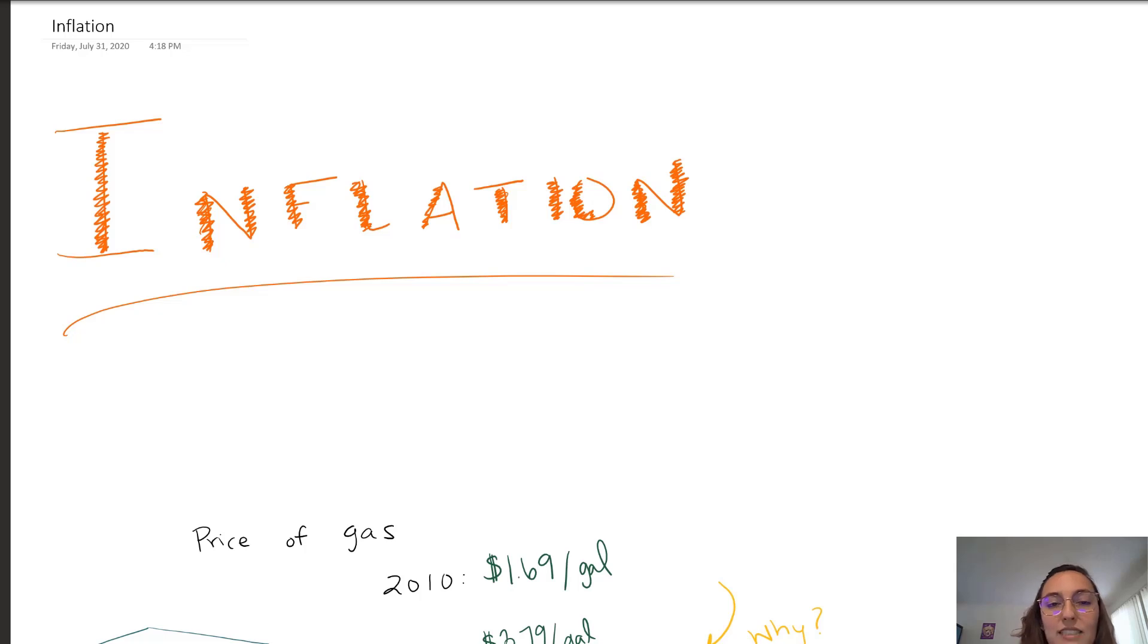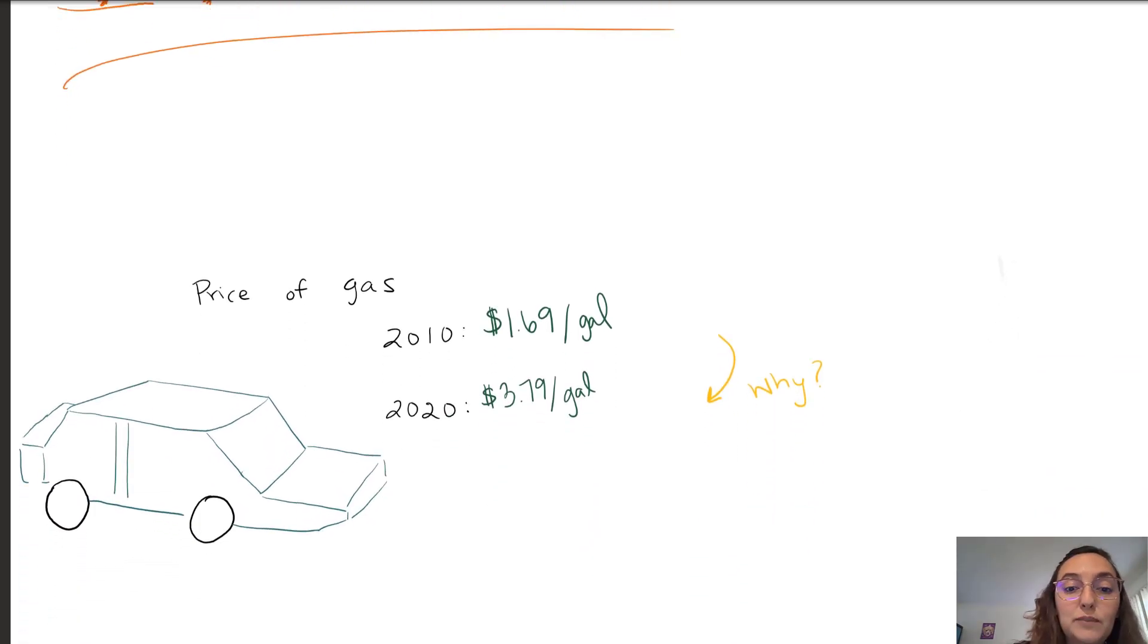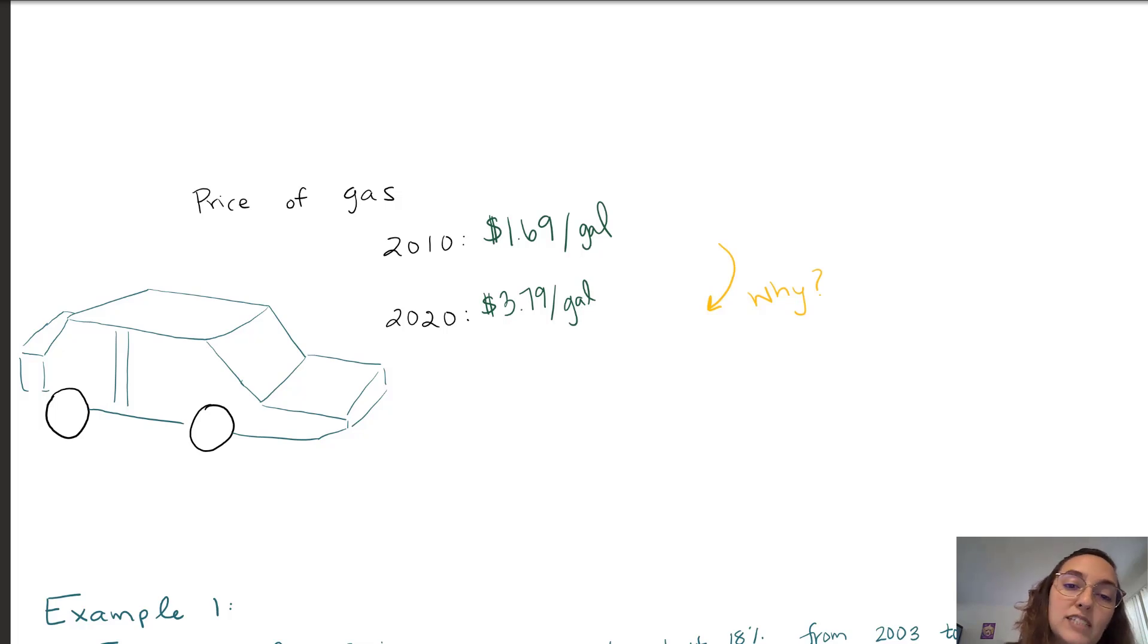So inflation is the increase in prices of consumer goods while the value of the dollar decreases. We're going to go through an example that is very relevant to me. When I first started driving in 2010, the price of gas was $1.69 per gallon. Now in 2020, the price is like a summa cum laude GPA, it's $3.79 per gallon.